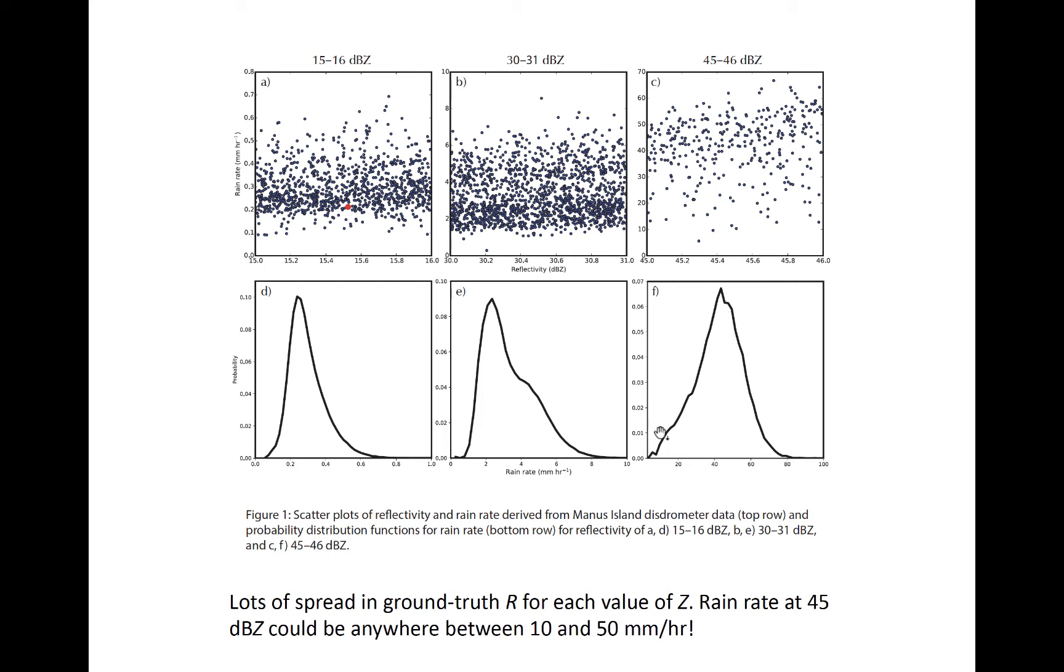For the middle bottom panel, note how the PDF has a bit of a secondary bump in the rain rate near 4 to 5 millimeters per hour. Let's look at this more closely.